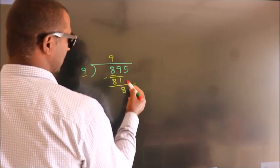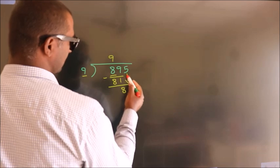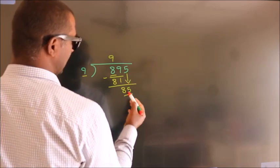After this, bring down the beside number. So 5 down, so 85.